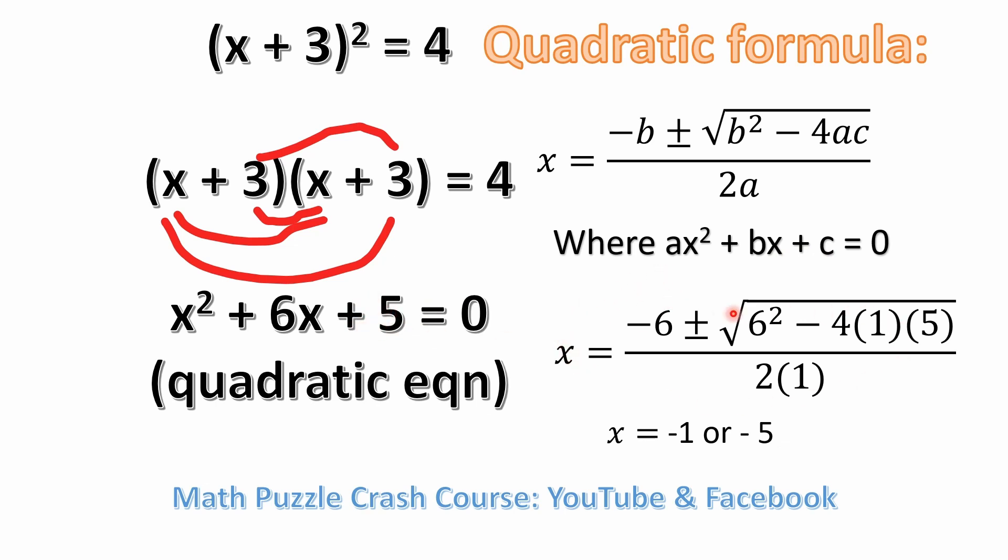So you can see over here on the quadratic formula, all we've done is substitute a, b, and c with the values that we've just determined. So we have minus 6 plus or minus. And then we have b squared, which is 6 squared minus 4ac, which a is 1, c is 5.